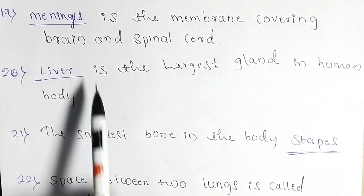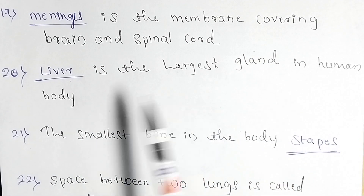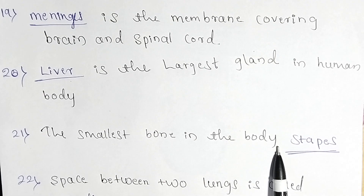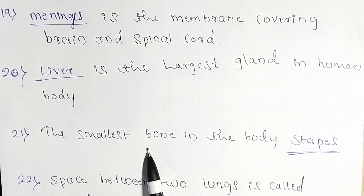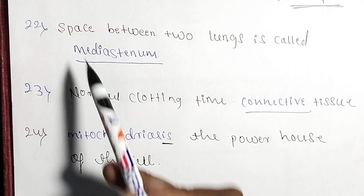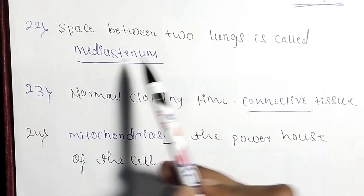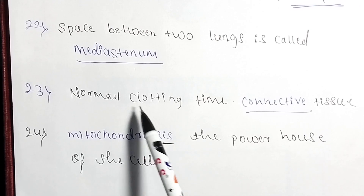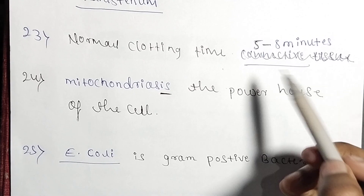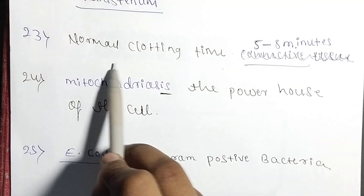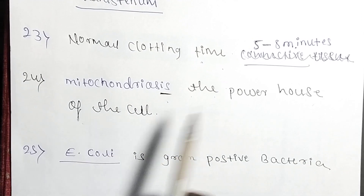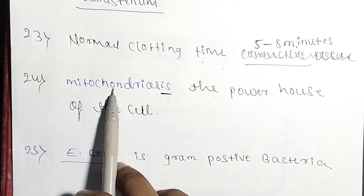The liver is the largest gland in the human body. The smallest bone in the body is the stapes. The normal clotting time is five to eight minutes. Mitochondria is the powerhouse of the cell.